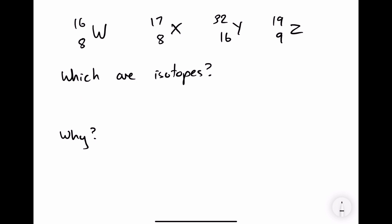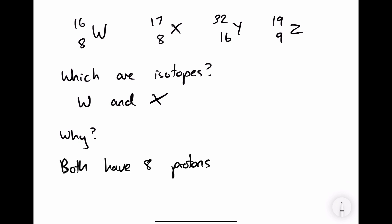Here is an example of a question you may be asked about isotopes. We have four choices: W, X, Y, and Z. The question asks which of these are isotopes and to explain why. The answer is W and X, because they both have 8 protons but a different number of neutrons — W has 8 neutrons and X has 9 neutrons.